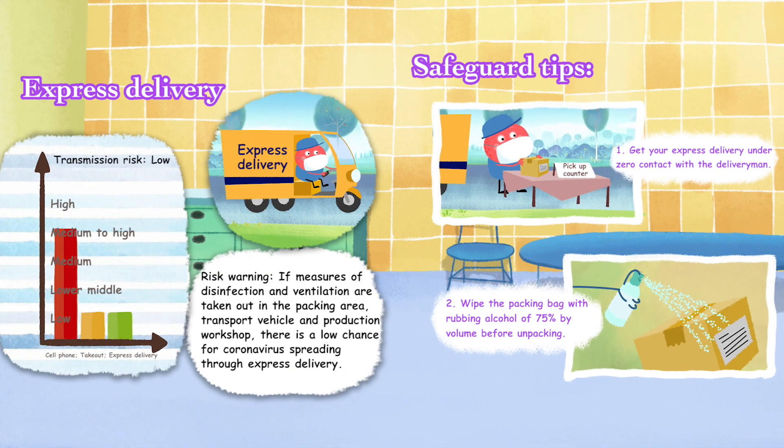Express Delivery — Risk Warning: If measures of disinfection and ventilation are taken in the packing area, transport vehicle, and production workshop, there is a low chance of coronavirus spreading through express delivery. Safeguard tips: (1) get your express delivery with zero contact with the delivery person, and (2) wipe the packing bag with 75% rubbing alcohol before unpacking.